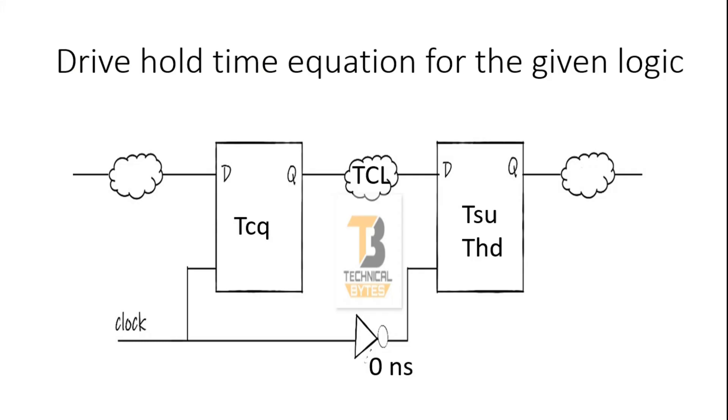Friends, the question is on your screen. You have to derive a hold time equation for the given logic. It is a very simple logic. It is a flip-flop to flip-flop path. But the exception is the capturing flop is receiving an inverted version of clock. Friends, you can pause my video here. Take your time to think of its answer. Otherwise, I will let you know its answer.